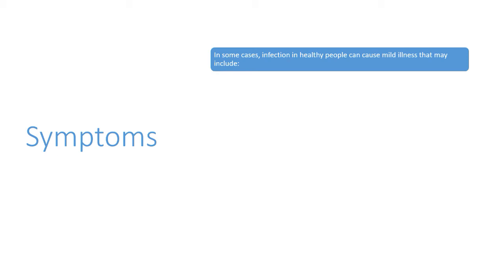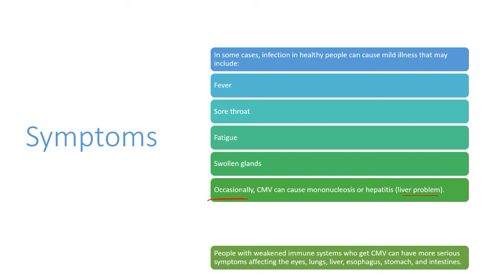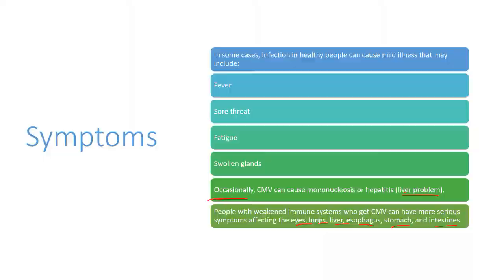Symptoms: in healthy people, CMV infection can cause mild illness including fever, sore throat, fatigue, and swollen glands. Occasionally, CMV can cause mononucleosis or hepatitis. People with weakened immune systems can have more serious symptoms affecting the eyes, lungs, liver, esophagus, stomach, and intestines.